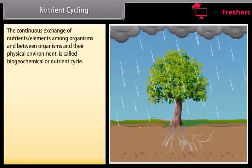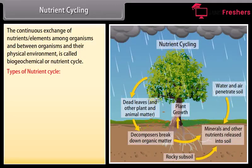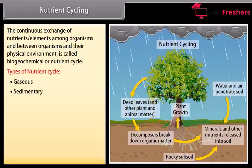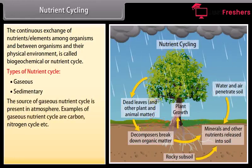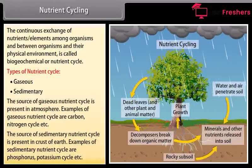The continuous exchange of nutrient elements among organisms and between organisms and their physical environment is called a biogeochemical or nutrient cycle. Types of nutrient cycle: gaseous and sedimentary. The source of a gaseous nutrient cycle is present in the atmosphere — examples are the carbon and nitrogen cycles. The source of a sedimentary nutrient cycle is present in the crust of the earth — examples are the phosphorus and potassium cycles.